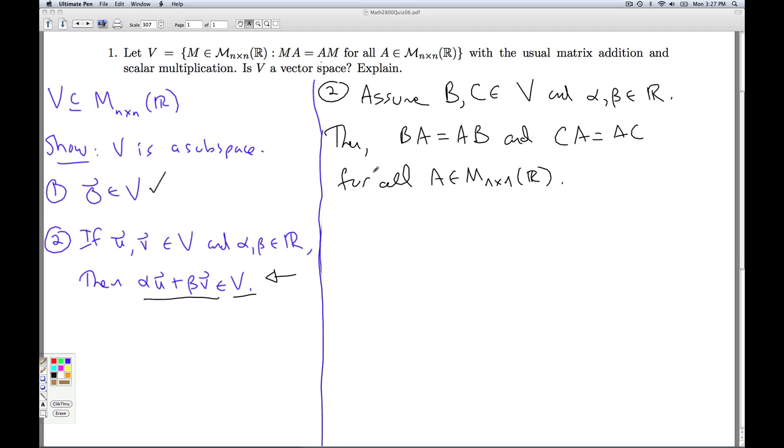What I need to show is that alpha B plus beta C acts the same way. So let's compute alpha B plus beta C times some generic matrix A. So that's what I'm going to do now. So I'm going to just let A be some fixed but arbitrary n by n matrix. And I've got to compute this matrix times A and see if I can reverse the order. Well, using the distributive property, this is alpha B times A plus beta C times A. Using the associative property, that's alpha times BA plus beta times CA.